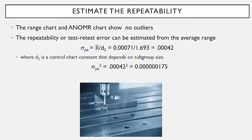Assuming that the range chart and analysis of mean range charts show no outliers, you can estimate the repeatability error by the average range. In this case, the standard deviation of the measurement system — not the variance — is equal to the average range divided by d2, which is a control chart constant, which is this value for this example data. You then simply square that to get the variance used in the equations before.